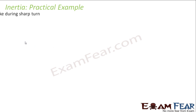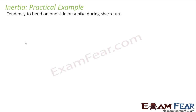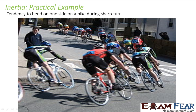Similarly, there is a tendency to bend to one side on a bike during a sharp turn. In hilly areas with very sharp road turns, the person sitting on a bike or cycle tends to bend. This bending also takes place because of inertia — the body wants to keep moving in the same direction, but because of the turn, the vehicle changes direction, and as a result the body bends.